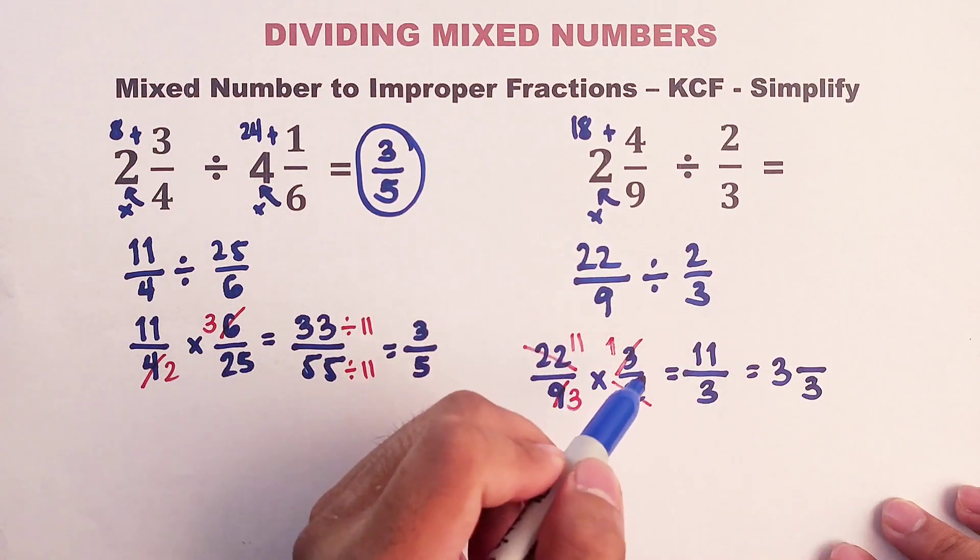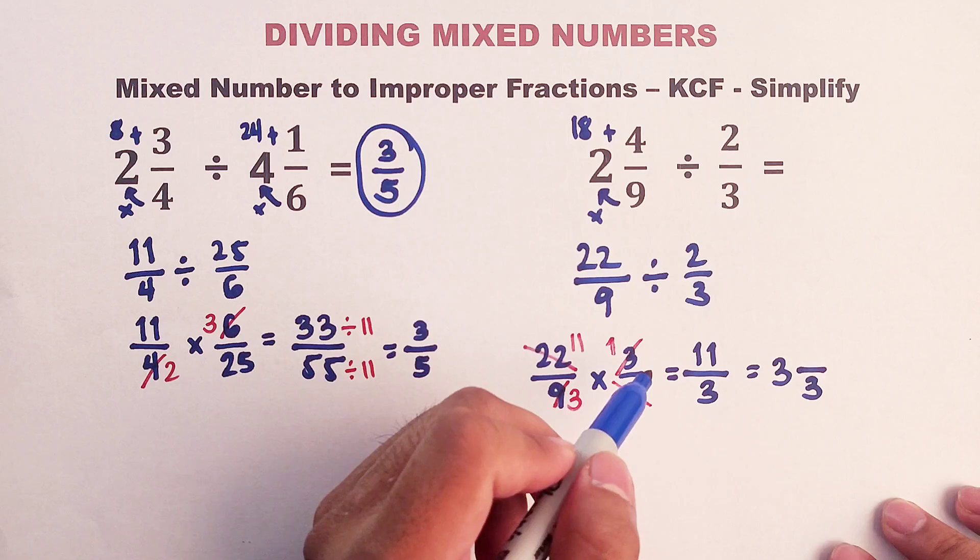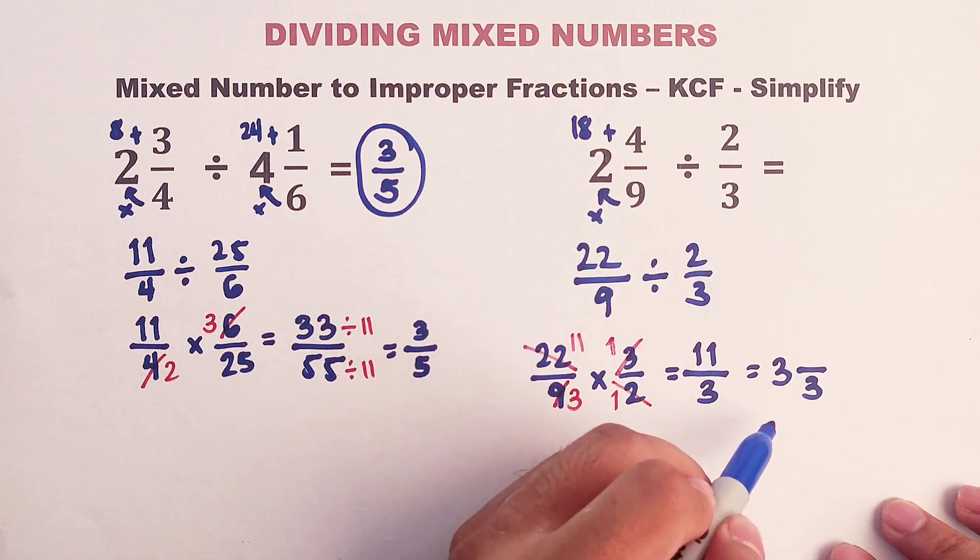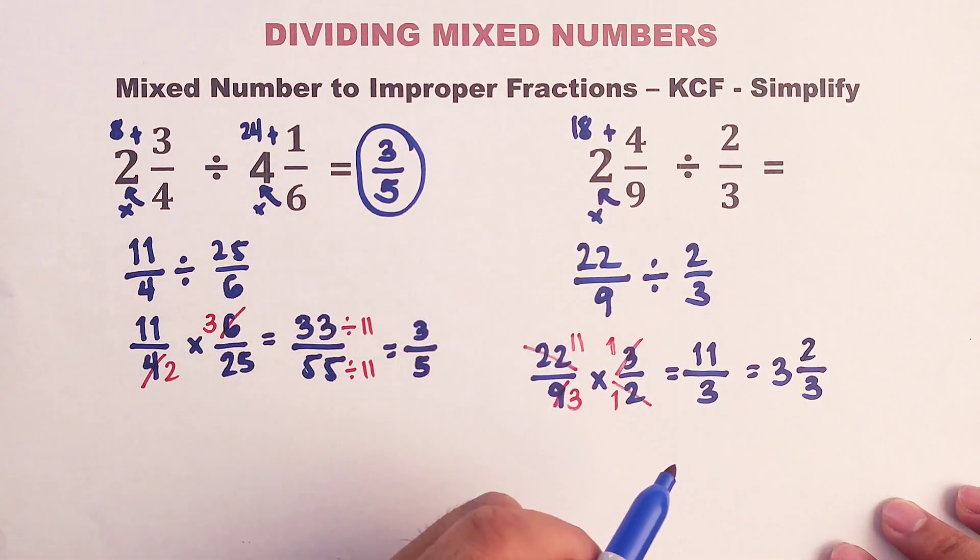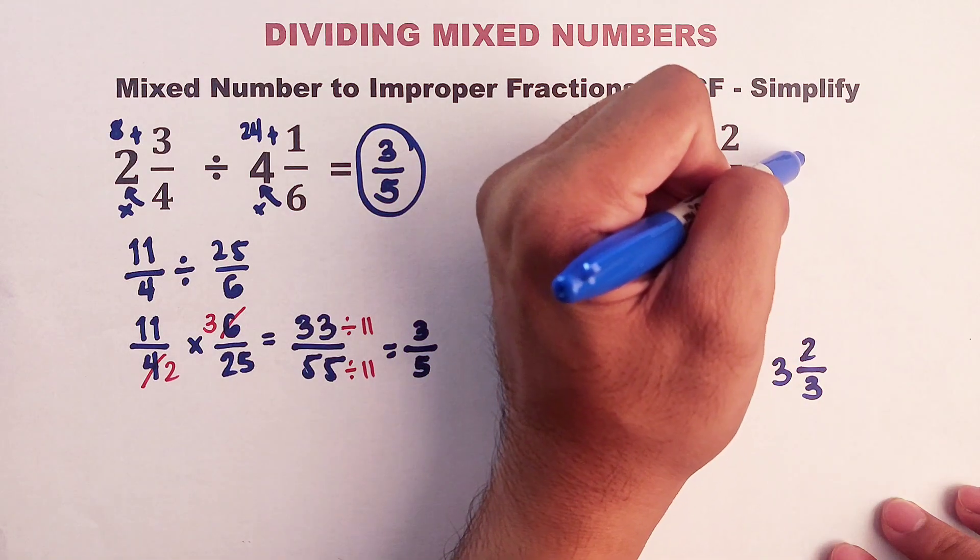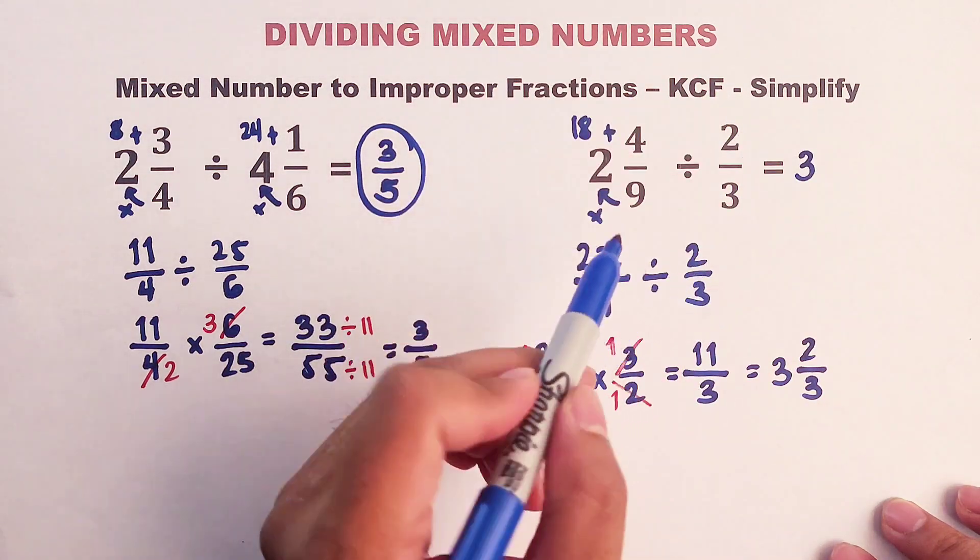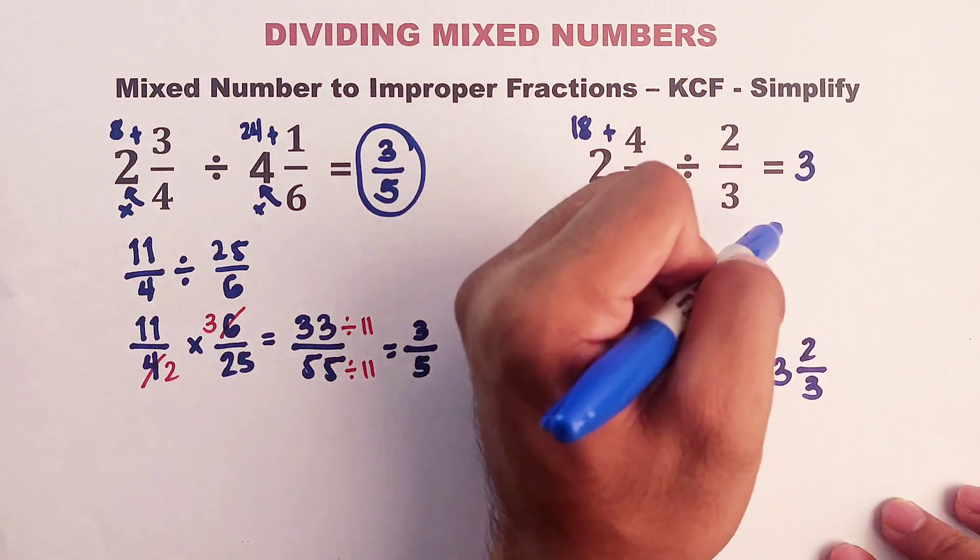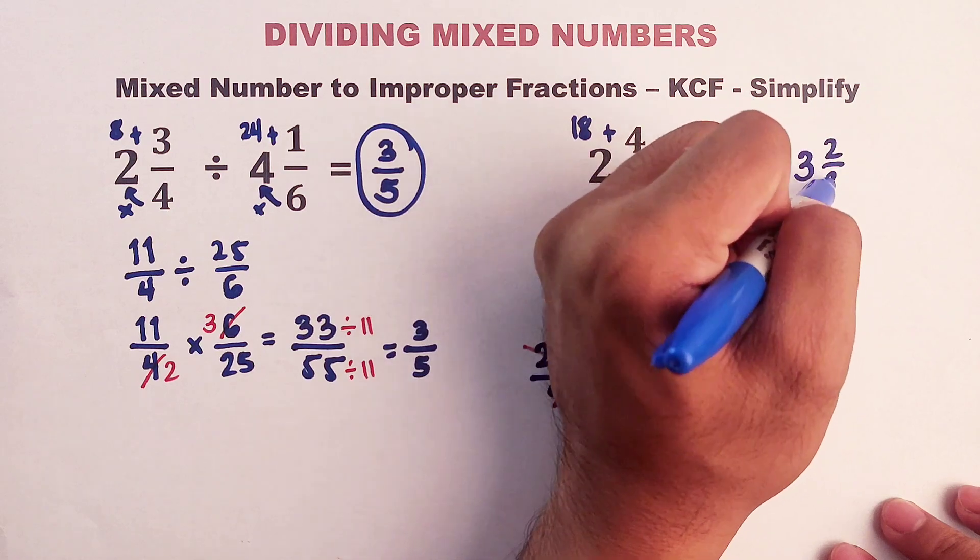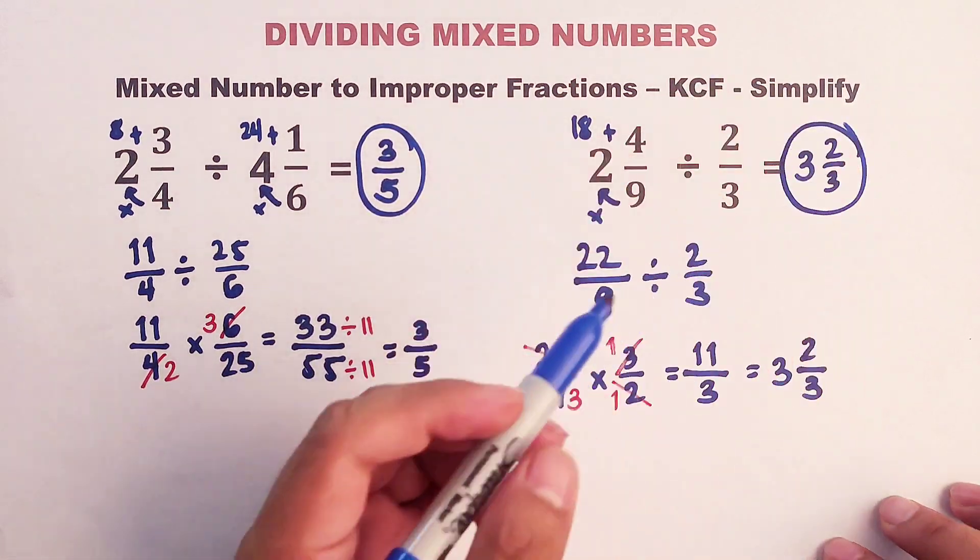And then, 3 times 3 is 9. So we have 9. 11 minus 9 is 2. So the numerator is 2. And as you can see, the final answer or the quotient between this mixed number and the fraction is 3 and 2 over 3. This is the final answer, guys.